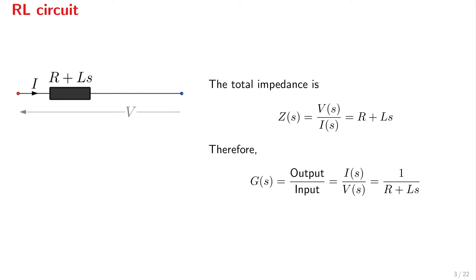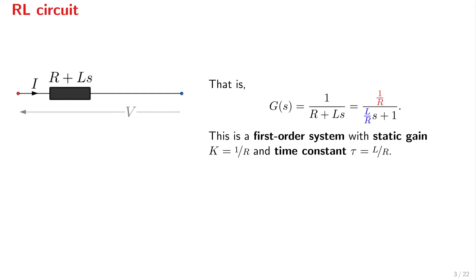We're looking for the transfer function G, which is the output over the input — that is I over V, current over voltage — and that is simply 1 over R plus Ls. Is that a first-order system, and if so, what is the static gain and what is the time constant? If we divide both the numerator and the denominator by R, so that the constant term in the denominator is 1, we end up with this form for our transfer function. This is indeed a first-order system with static gain K equal to 1 over R, and time constant tau equal to L over R.